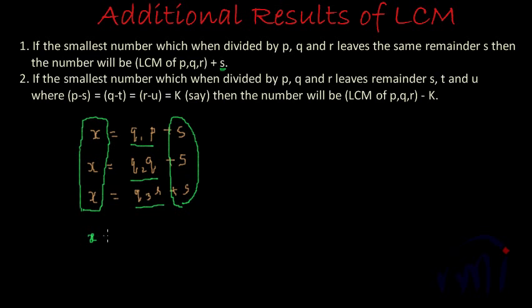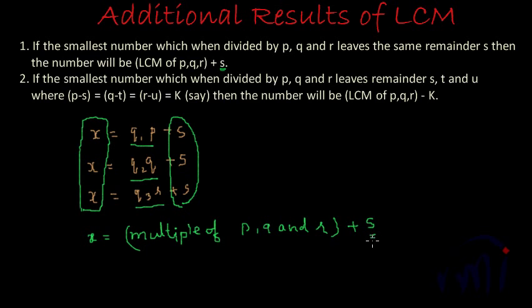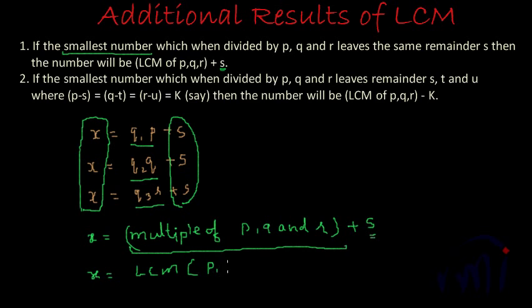That means X will be a multiple of P, Q and R, and then we add S because we are getting S as the remainder every time. Since we are talking about the smallest such number, this multiple has to be the least multiple. So X will be the LCM, or the least common multiple, of P, Q and R plus S — and that is our first result.